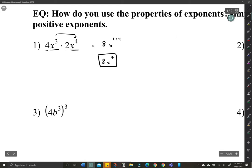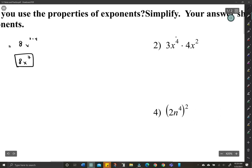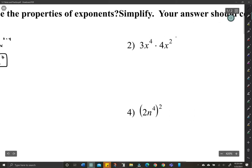Let's take a look at number two. Similar here, so x to the fourth and x squared. We'll take care of the 3 times the 4, which is 12. 4 and 2, hopefully that's pretty easy. Adding, so x to the sixth. That's where it comes out to be.